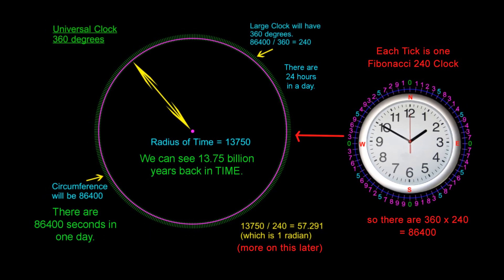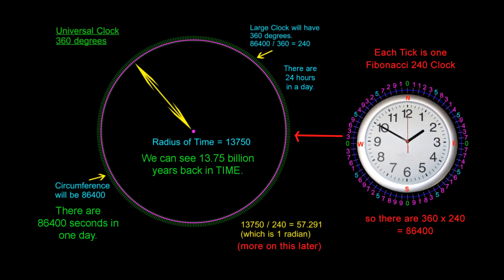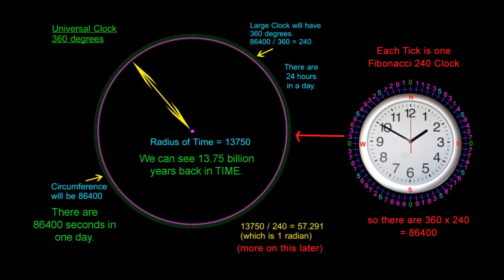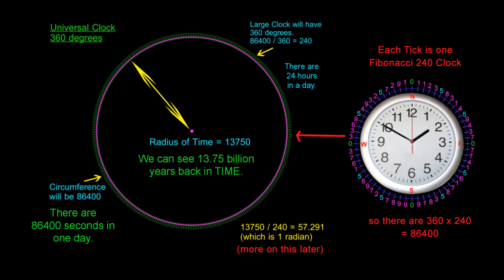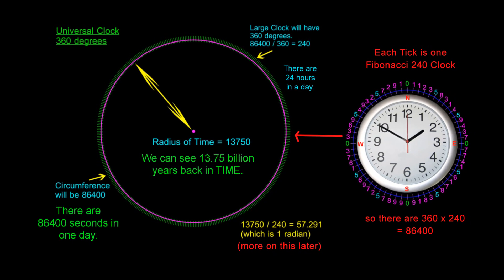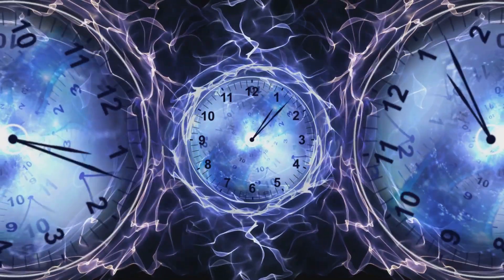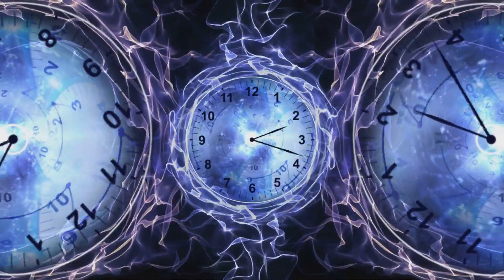Here I have taken the Fibonacci clock which equals 240 and I have inserted it on a compass that has 360 degrees to create this larger clock which has a value of 86,400. I have essentially blended time and space to create what I call a universal clock.